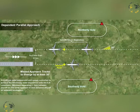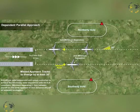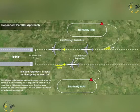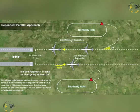Once established on an ILS localizer or MLS track, radar separation is to be three nautical miles between aircraft on the same ILS unless wake turbulence requires greater longitudinal separation, and two nautical miles between aircraft on adjacent localizers or MLS tracks.